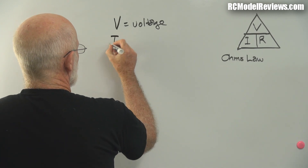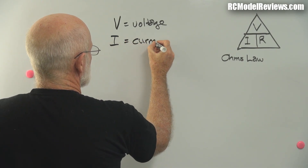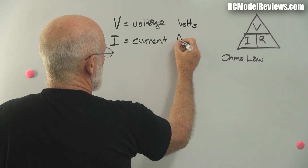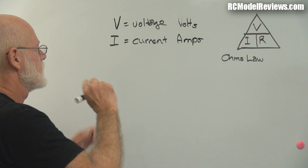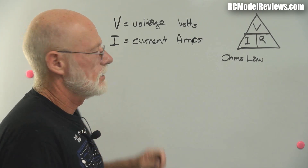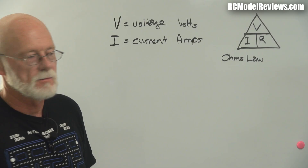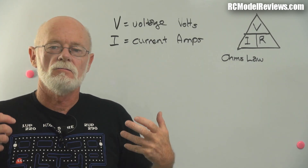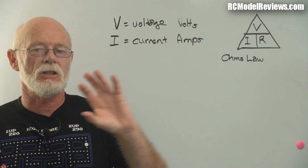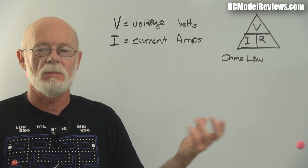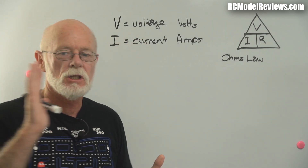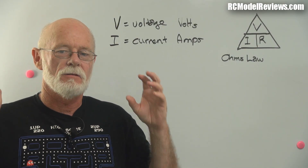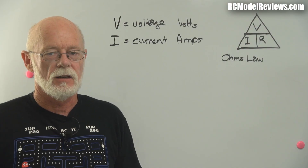The next thing is something we call I, but it's actually the current. Voltage is measured in volts, and current is measured in amps — those are the measurement units. We use the symbol I for current. Relating it back to water, the current is the flow — it's the amount of electrons actually flowing through a wire or any part of the circuit. So the voltage is the pressure, it's what's pushing things, and the current is the flow — it's the actual amount of electricity, the amount of electrons, flowing through a particular part of the circuit.